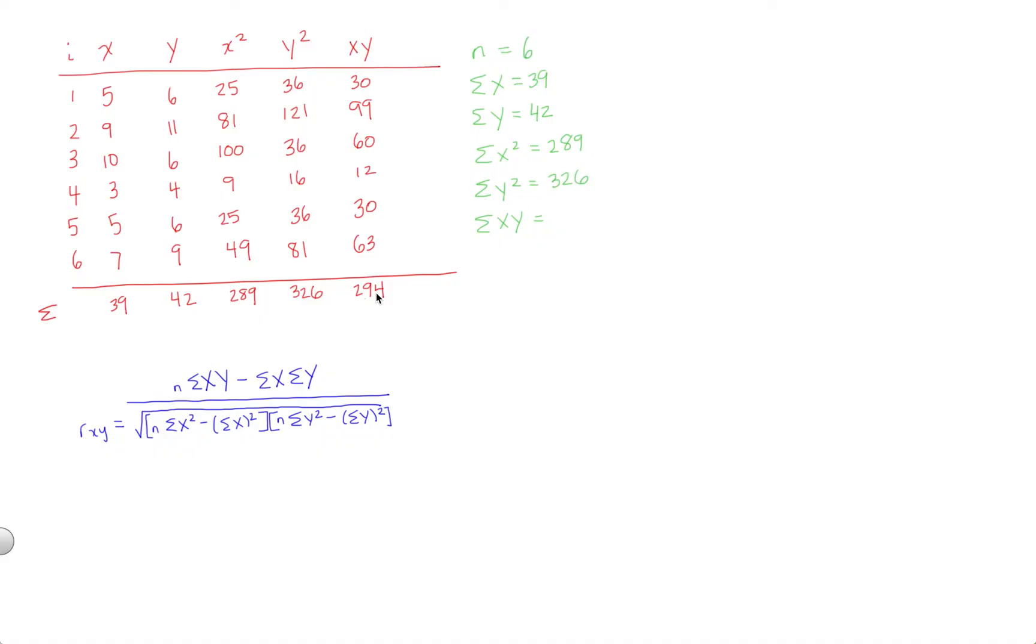And now it becomes a simple matter of plugging and chugging, and that's where we love to be, because that's pretty easy. So let's go ahead and do that now. I'm going to go ahead and set up our problem here. So in the numerator, we have n times sigma xy. That's going to be 6 times 294 minus sigma x times sigma y, which is going to be 39 times 42. And now we have the denominator, which is pretty ugly, but it's the same idea. It's just going to be plugging and chugging.